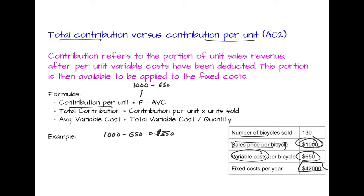However, this is not the same as your total contribution. Your total contribution is looking at this contribution per unit, our $350, times our units sold. And this is our forecasted or expected units sold, and this is 130 over here. So for that, we then just take $350 times 130, and that will get us $45,500. So that is our total contribution.